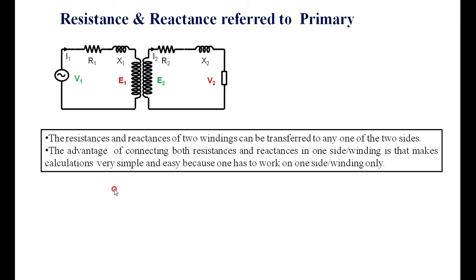The advantage of combining both resistance and reactance on one side, or one winding, is that it makes calculations very simple. If we transfer R2 and X2 to the primary side, or R1 and X1 to the secondary side, it makes the calculations simple. Instead of working on both sides, you can work on any one side — either primary or secondary — which is why we transfer the resistance and reactance of a transformer to any one side.